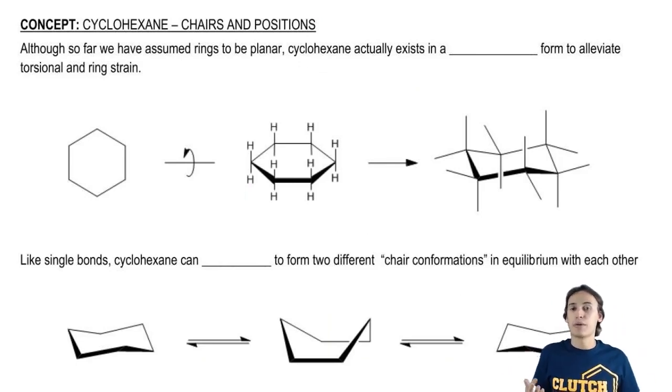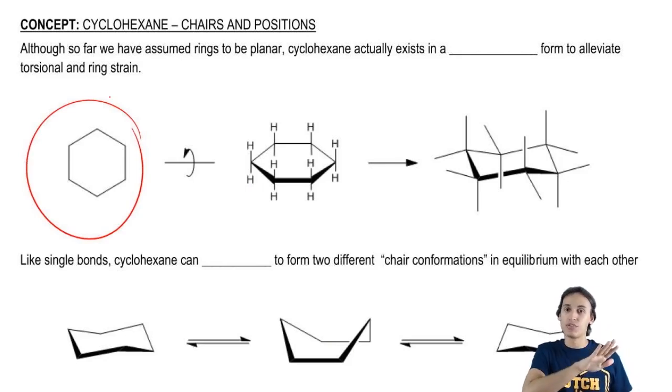So far in most of chemistry, we were drawing rings like that and always assumed that they would just be planar, that they would just be like a flat thing on the paper.